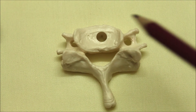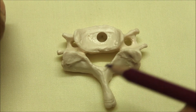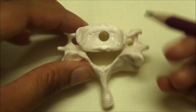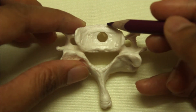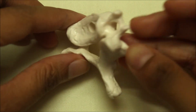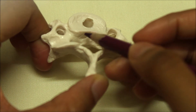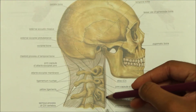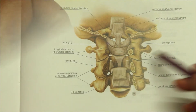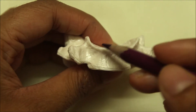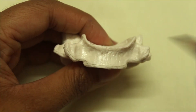Now let's look at the attachments on the typical cervical vertebra. The anterior longitudinal ligament is attached to the upper border on the front of the body, while the posterior longitudinal ligament is attached to the lower border of the back of the body. On each side of the anterior longitudinal ligament, there is the attachment of the vertical plate of the longus colli muscle.